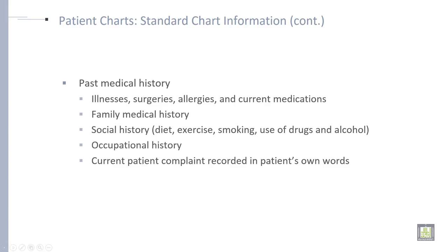Under past medical history: illness, surgery, allergy, and current medication. Then family medical history, and then social history. Under social history: diet, exercise, smoking, use of drugs and alcohol.